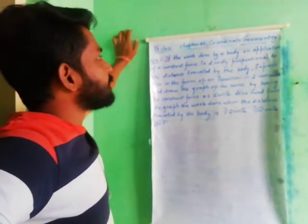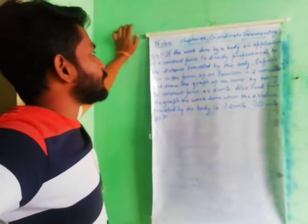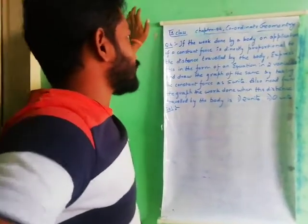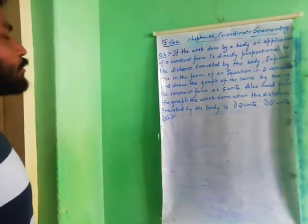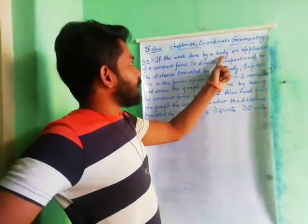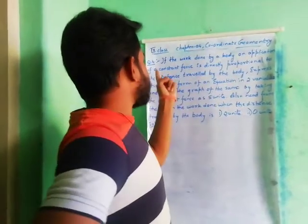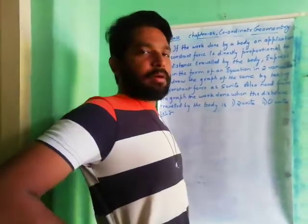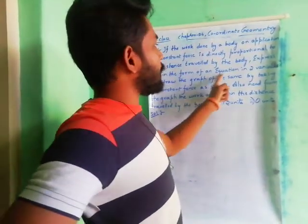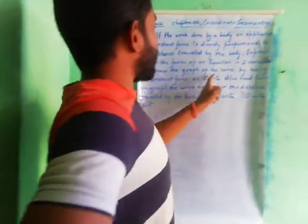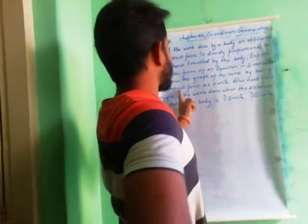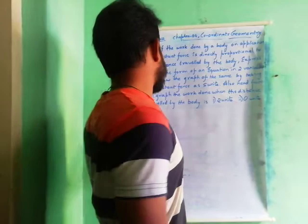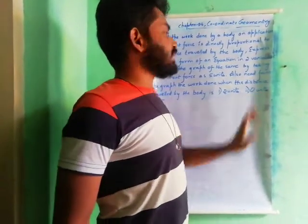If the work done by a body on application of a constant force is directly proportional to the distance travelled by the body, express this in the form of an equation in two variables and draw the graph of the same by taking the constant force as 5 units. Also read from the graph the work done when the distance travelled by the body is 2 units and 0 units.